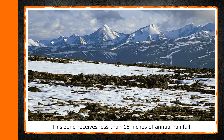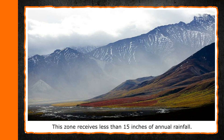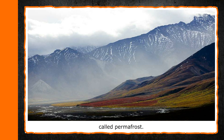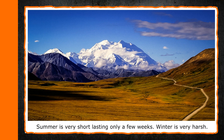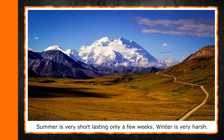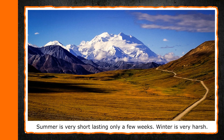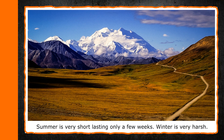Tundra. This is the freezing treeless zone of the earth. This zone receives less than 15 inches of annual rainfall. It has permanently frozen ground for almost the entire year, called permafrost. Summer is very short, lasting only a few weeks. Winter is very harsh.